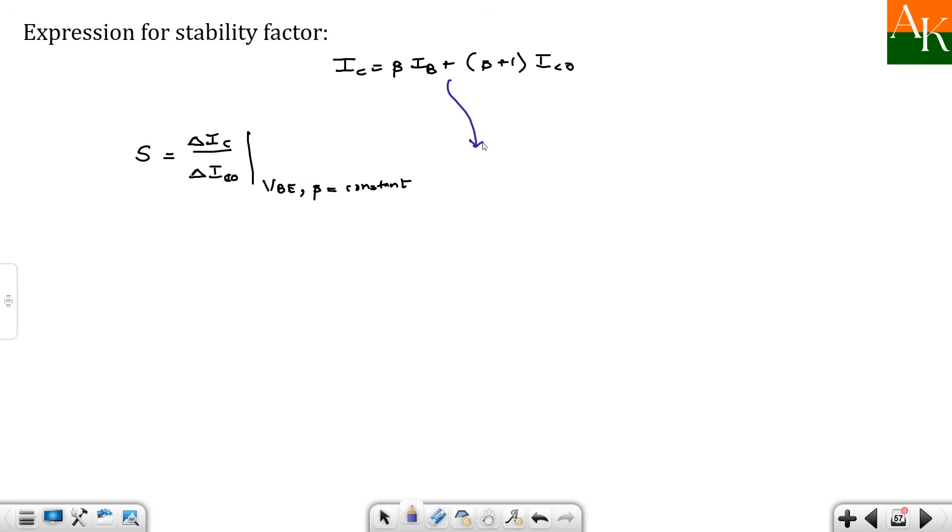And for this calculation you are keeping VBE and beta constant. So you differentiate this equation with respect to IC. I will find out delta ICO by delta IC and I will take reciprocal of that one. So iska derivative with respect to IC - one, here you will have beta is a constant so beta will come outside, here you will have term as delta IB by delta IC. You are assuming beta constant so beta plus 1 will be outside and here you will have delta ICO by delta IC. Your aim is to calculate delta IC by delta ICO.